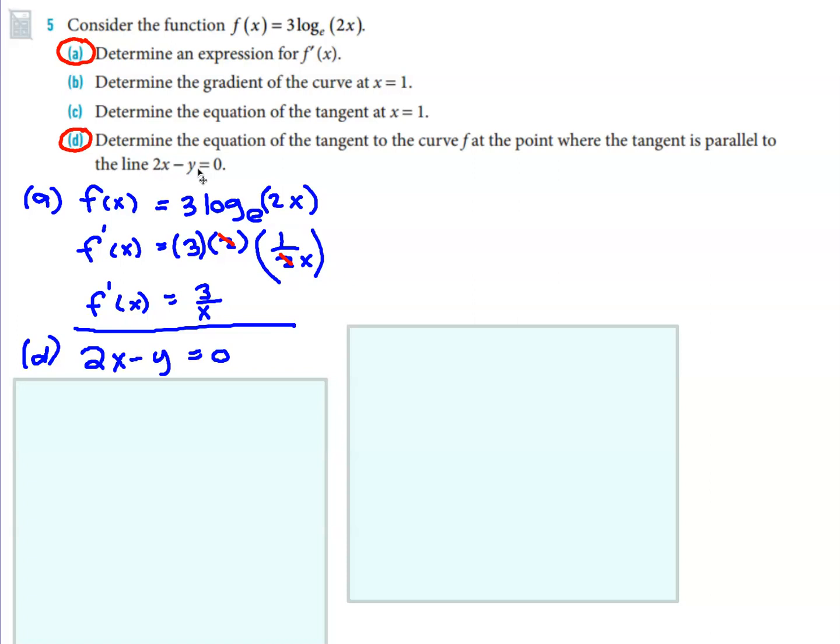So, again, you might want to have a go at this on your own. Otherwise, keep watching. Okay, so let's just write it in the form y equals mx plus c. So bring the y by itself, and that means y equals 2x, and that means the gradient is 2.